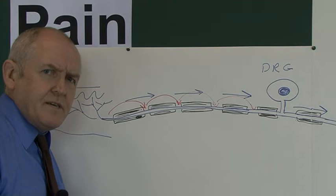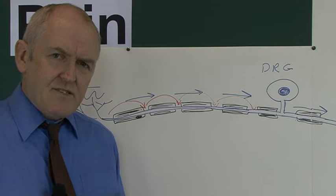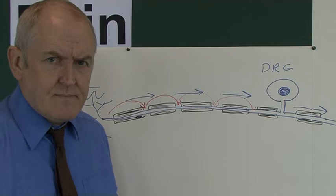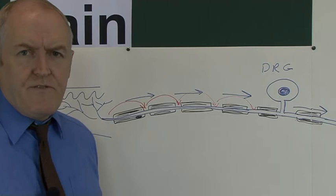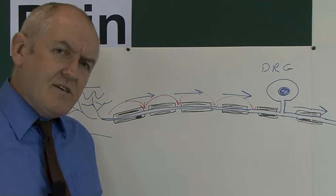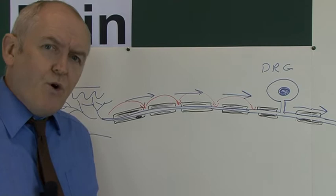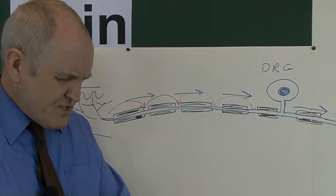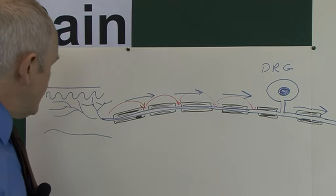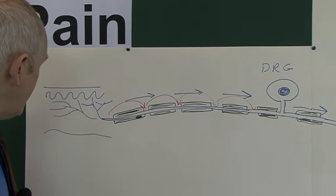Very often after a sharp, well-localized pain, you get a kind of ache — achy pains that are more diffuse, sometimes called dull pains. What is the physiological and anatomical basis of these dull, achy, more diffuse pains? You might not be able to say exactly where it is — you can sometimes say it hurts around a general area. The answer is a completely different type of nerve fibre.